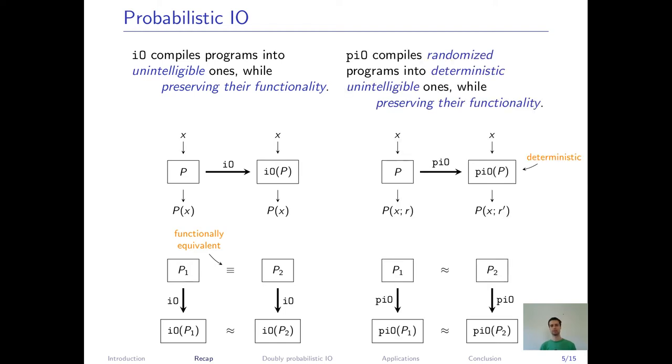Probabilistic I.O., on the other hand, compiles a randomized program into an unintelligible deterministic one. So clearly, the obfuscated program cannot behave exactly as the original randomized one just because there is no randomness. But for this talk, it will be enough to ignore this, correct this issue and say that the obfuscated program behaves similarly in a suitable sense. In the context of p.I.O., unintelligible means that if two programs behave functionally indistinguishable, then their obfuscations should be guaranteed to be indistinguishable too.